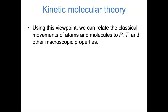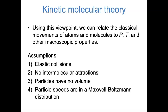Kinetic molecular theory is a way of viewing the macroscopic properties of ideal gases — like pressure and temperature — in terms of the classical movements of atoms and molecules and their collisions with each other and the container walls. It assumes an ideal gas with no intermolecular attractions and no particle volume, that all collisions are elastic meaning no energy is lost, and that the speeds of atoms and molecules follow a Maxwell-Boltzmann distribution — a probabilistic spread of different speeds.